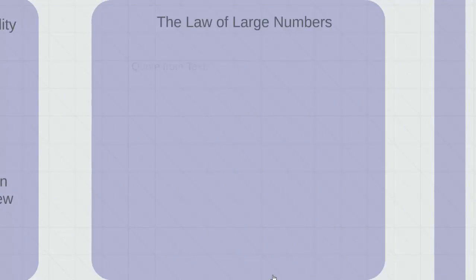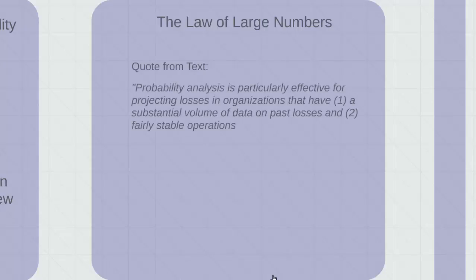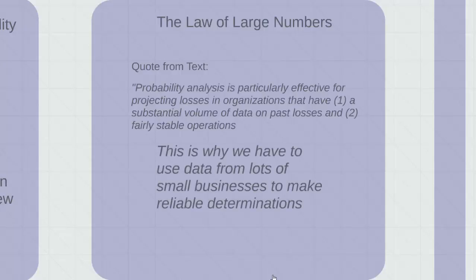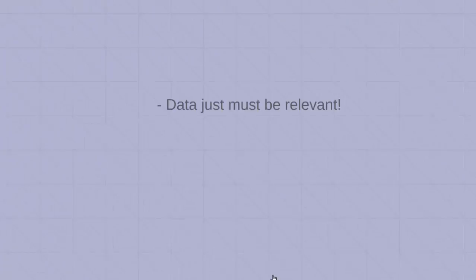Now let's discuss the law of large numbers. A quote from the text: Probability analysis is particularly effective for projecting losses in organizations that have, first, a substantial volume of data on past losses, and second, fairly stable operations. Because of what we discussed in risk management, that as the number of observations increases, outcomes become more predictable, you need a substantial volume of data in order to have predictable outcomes. And if your operations are volatile, you're not going to be able to use past experience to predict future experiences. This is why we have to use data from lots of small businesses to make reliable determinations. Remember that data must be relevant.